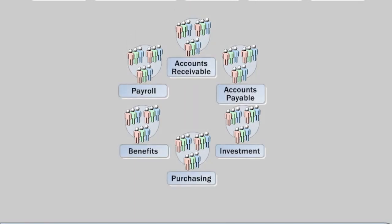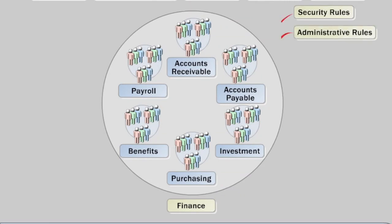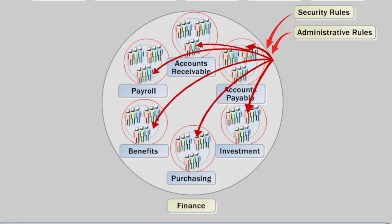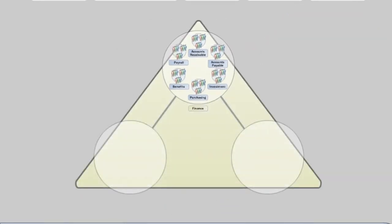For example, if your organization has six financial departments, each with its own OU, to simplify administration you can nest all six OUs in one finance OU. You can then create one parent OU and apply security and administrative rules to it — these rules will apply to all of the nested OUs. OUs organize objects within a single domain.